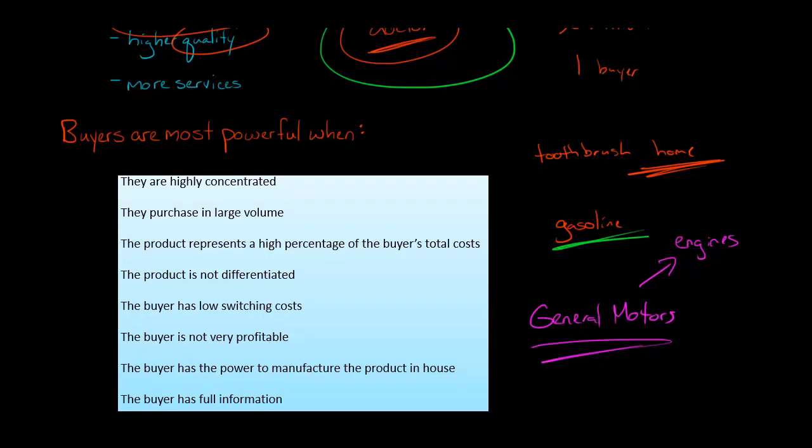Now, the more information that the buyer has, the more leverage they're going to have. So if we use the example of cars again, so when you walk onto a car dealership lot and you say, I would like to buy a car, if you know what that car dealer actually paid for that car, you say, okay, let's say that they, for example, let's say that the dealer got the car from General Motors and that they paid $32,000 for it.